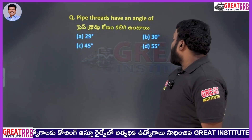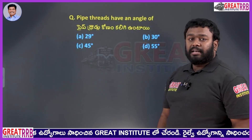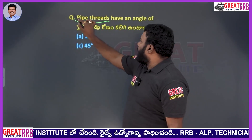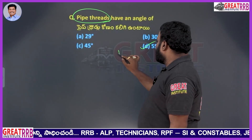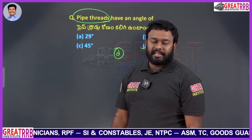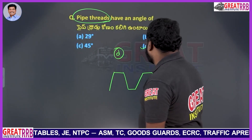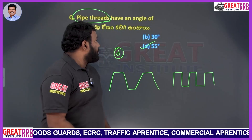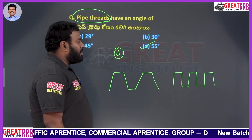Pipe threads have an angle of: A 29 degrees, B 30 degrees, C 45 degrees, D 55 degrees. Pipe threads have a standard angle used for coupling. There are different types of threads — square threads, ACME threads, and others. For pipe threads, the standard angle is 55 degrees. Option D will be the right answer.